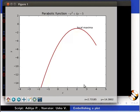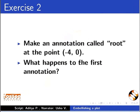Pause the video. Try this exercise and then resume the video. Make an annotation called root at the point minus 4 comma 0. What happens to the first annotation?